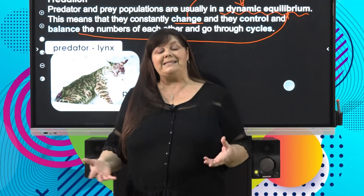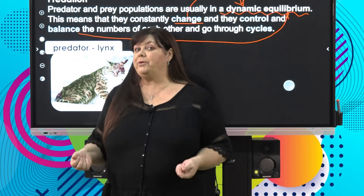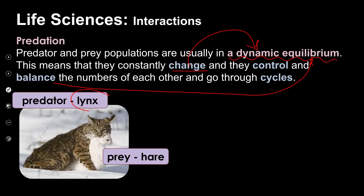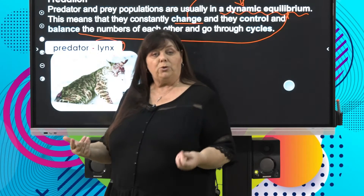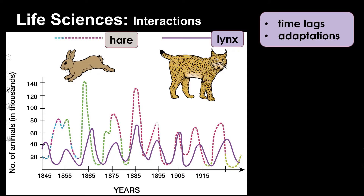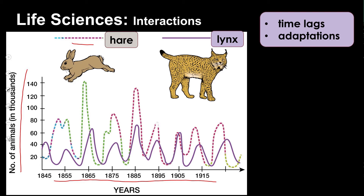One of the most classic examples of a predator-prey relationship is that between the lynx and the hare. The lynx is indigenous to North America, and the snowshoe hare is the prey population. Looking at this graph, on the y-axis we have the number of animals in the population, on the x-axis we have years, the hare is shown in green, and the lynx population in purple.